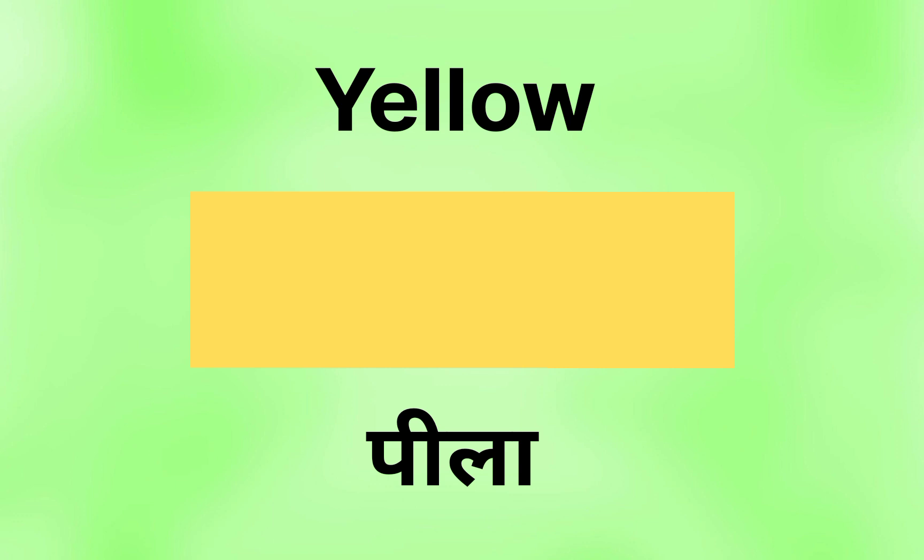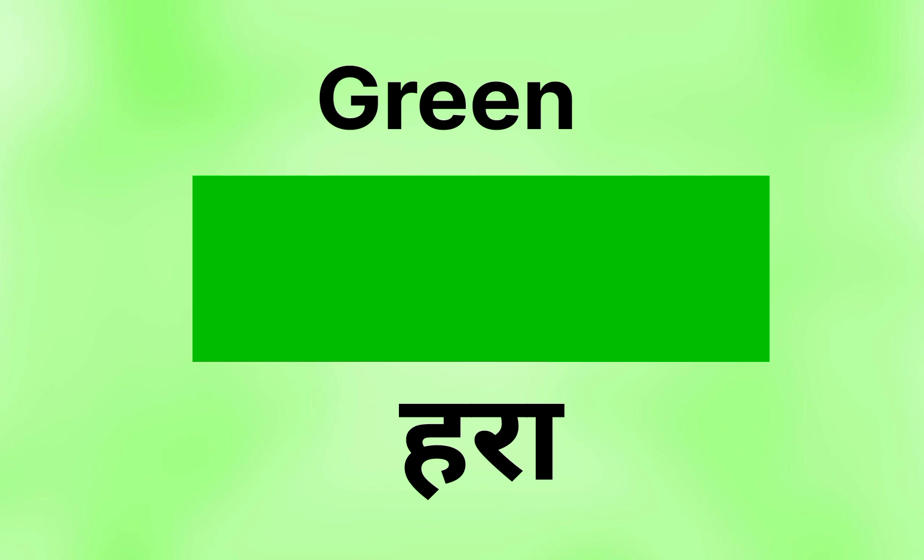Y, E, W, O — Yellow. W, O, L, O means PILA. G, R, W, E, D — Green means HARA.